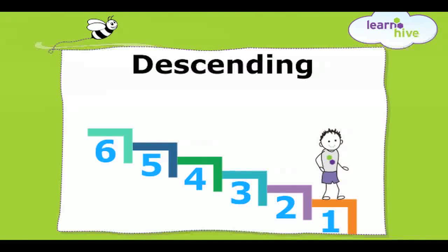Note in descending order, each number is smaller than the previous number. So six, five, four, three, two, one are said to be in descending order.